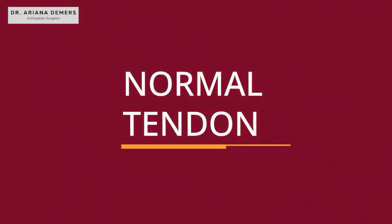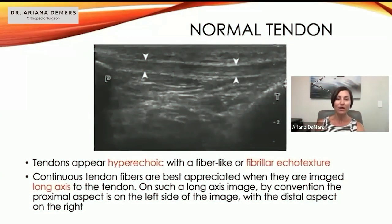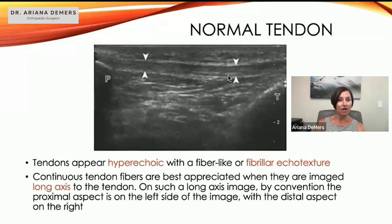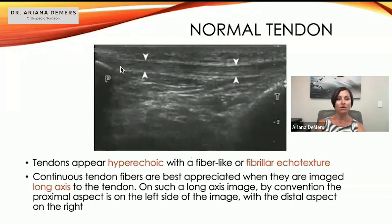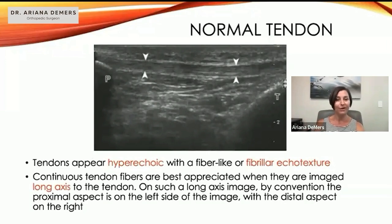We'll explain the echotexture as well as the echogenicity. This is normal tendon — along the arrows, this is actually the patellar tendon — and it's hyperechoic, meaning a little bit brighter white, with a fibrillar echotexture showing densely packed fibers. Tendon goes from bone to muscle, but the patellar tendon actually goes from bone to bone, so calling it a patellar ligament may be more proper.